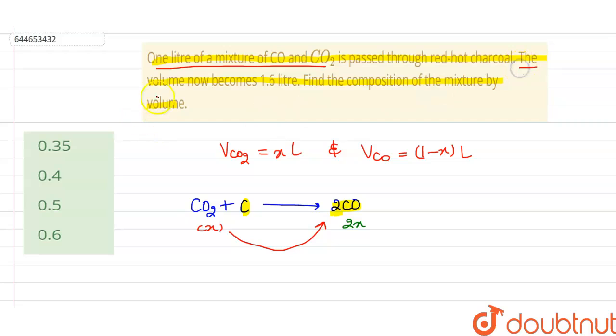Now here, in the question it has been given the volume becomes 1.6 liters. So in the mixture we are having CO plus CO2, but now CO2 when reacted with the charcoal itself gets converted into the CO having the volume 2x liter.